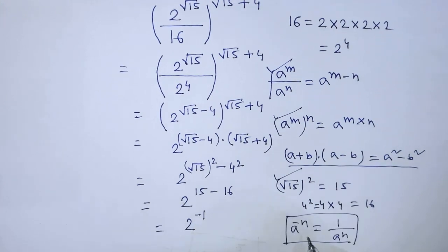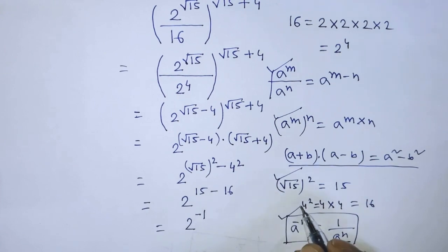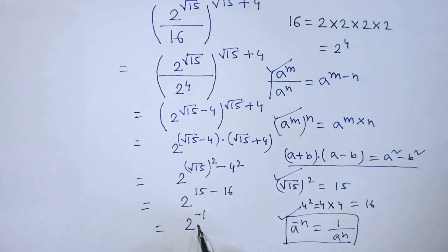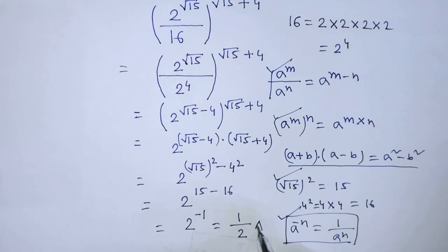We know that a to the power minus n equals 1 over a to the power n. According to this formula, we write 1 over 2 in the place of 2 to the power minus 1. So this is our final answer: 1 over 2.